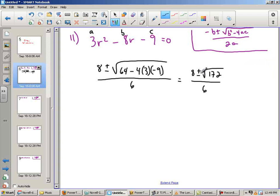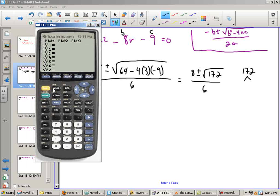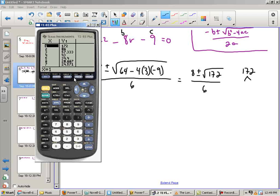This is equal to 8 plus or minus the square root of 172 over 6. Now I need to look at the 172 and see if I can break it down. I'm not really sure if there's a quick, easy way to do this. Obviously, I could go to Y equals and do 172 divided by X and get to my table. But since most of you won't have that access, I'm actually just going to do 172.